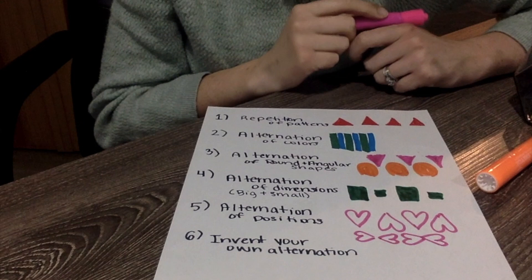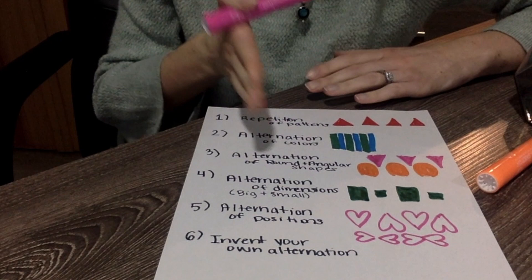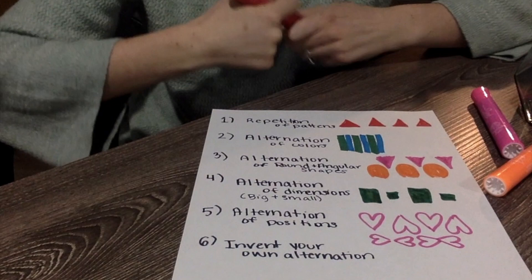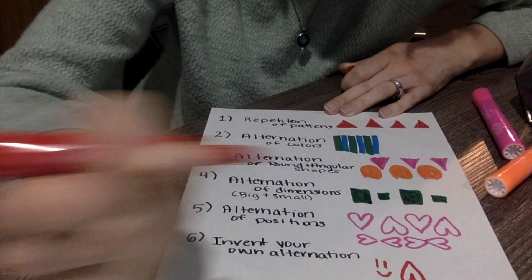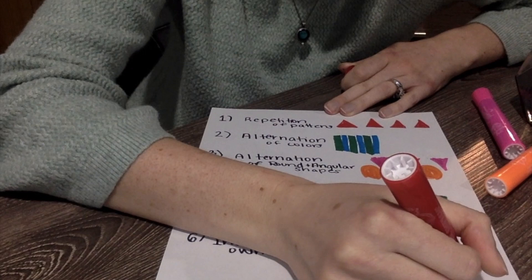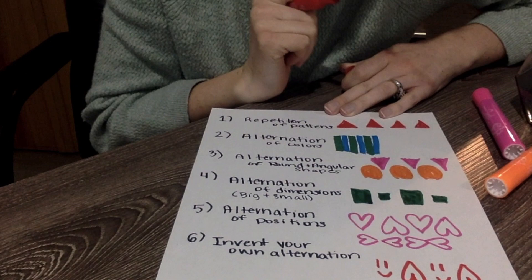And then the last one is inventing your own alternation, so you're just altering or going flip flop doing a pattern like that. So it can be anything and this one is up to you. I'm gonna do a smiley face, do an upside down heart and then do another smiley face and upside down heart. I think that is my new invention so I would love to see yours.